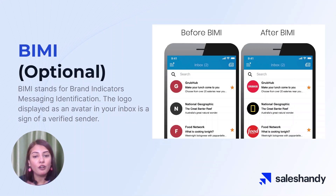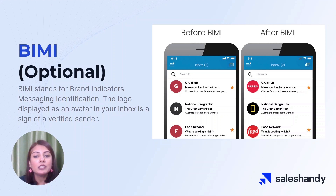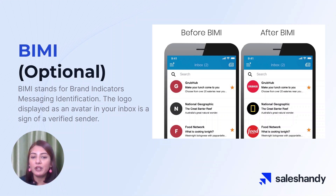BIMI is not a part of the DNS record. This is a completely optional extra layer of security that you can add for better deliverability. Have you ever noticed a logo or avatar displayed next to an email in your inbox? That's called BIMI, or Brand Indicators for Message Identification. BIMI is a way to verify that the sender of the email is legitimate and not a spammer or phisher. So if you see a BIMI logo, you can trust the email is coming from a verified sender.